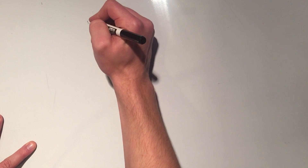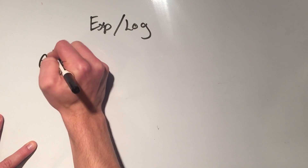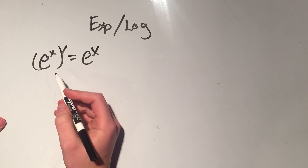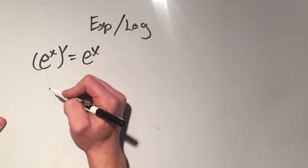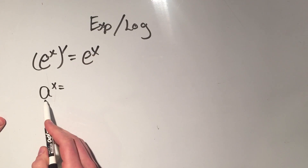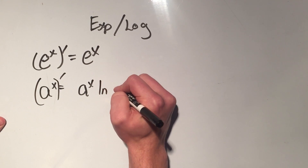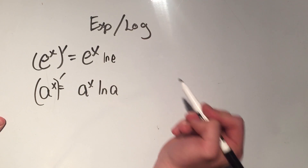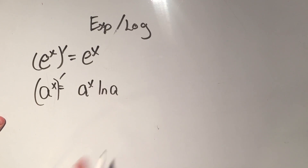Moving on — exponential and log derivatives. The derivative of e to the x is e to the x. More generally, the derivative of a to the x is a to the x times ln of a. We don't write the ln of e for the e to the x case because ln of e is 1.